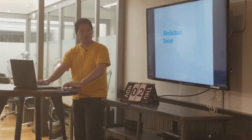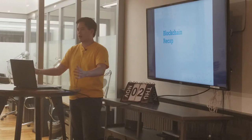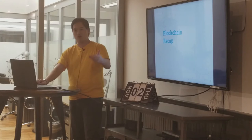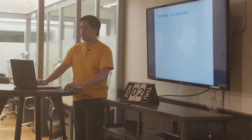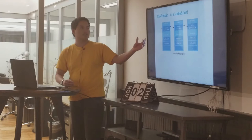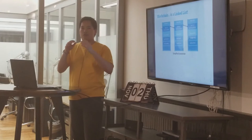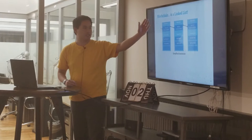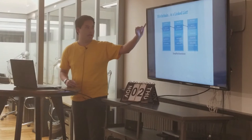Blockchain is a linked list. A linked list is an object that holds the address of a previous object. In blockchain, we have blocks, and the latest block holds the hash — the address — of the previous block, thus forming a linked list.